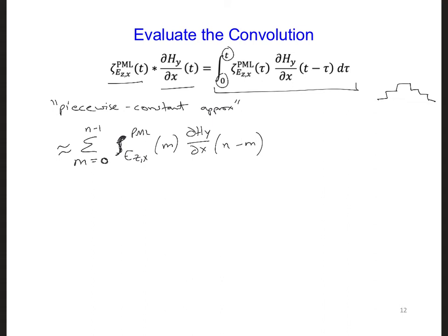We already know how to approximate d hy d x in discrete space and time using central differencing, but we need to figure out how to write the discrete impulse response, zeta, to use for zeta of m in the summation.